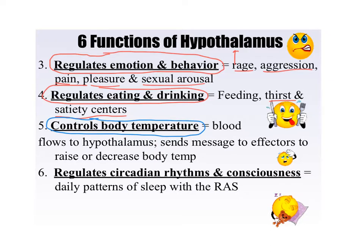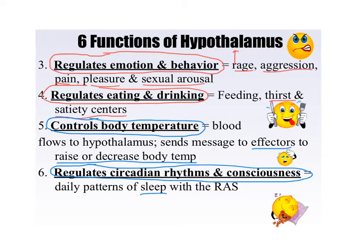Thermoreceptors in the hypothalamus are constantly monitoring the temperature of the blood, then sending messages to effectors to either raise or decrease body temperature depending on what is needed. It also helps regulate your circadian rhythms and consciousness — basically your sleep and awake cycles — and remember, the reticular activating system also plays a role in that. These are the six functions of the hypothalamus — definitely have these in your notes. It's going to be a short answer question, and you'll need to know at least four or five of them for full credit.